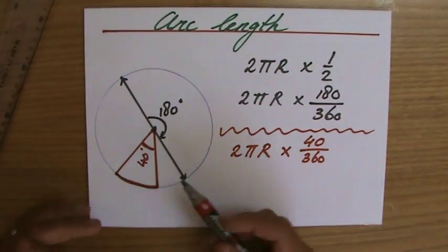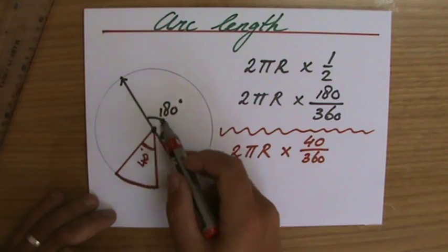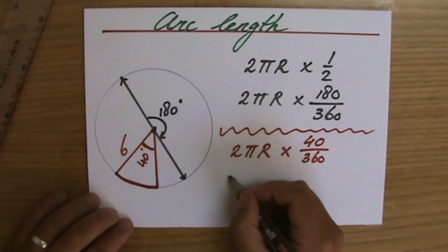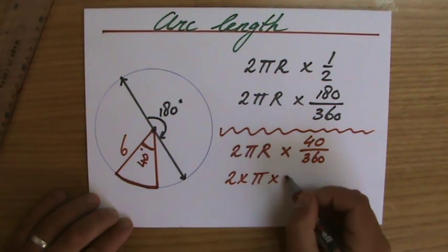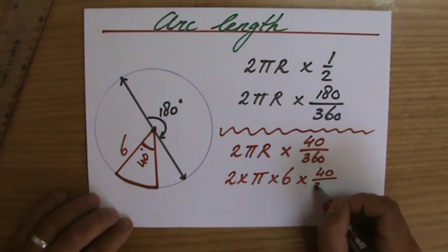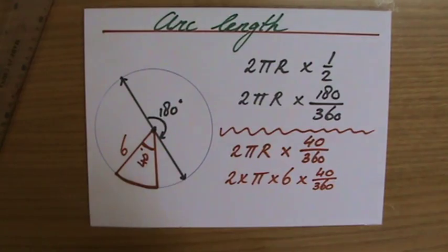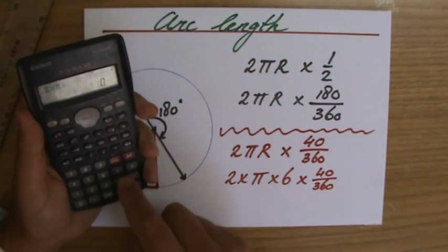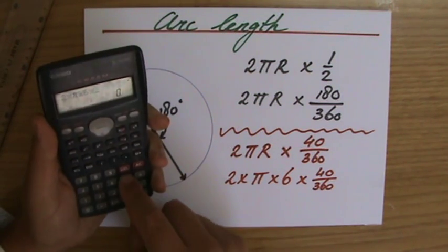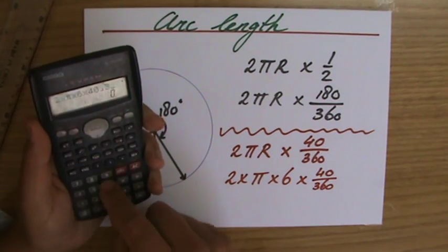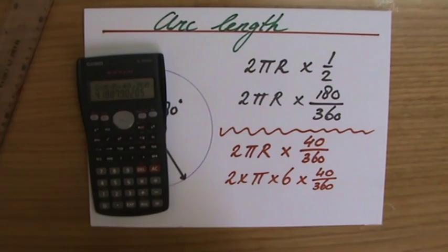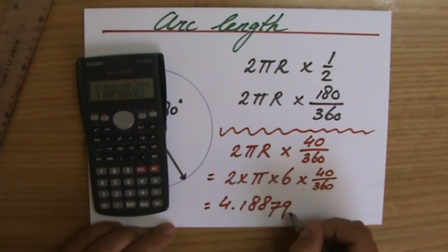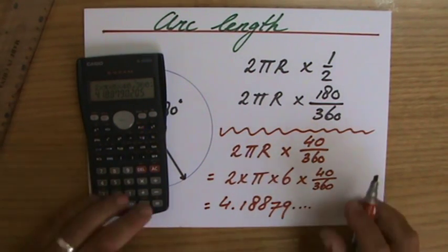Now, for half a circle, you would just times by a half, but that is actually 180 out of 360. So I believe we said that the radius was 6, so let's just continue with this one. 2 times pi times 6 times 40 out of 360, which is actually 1 over 9, but okay, that's for the experts. 2 times pi times 6 times 40 over 360 equals, and then it's going to tell me that that equals to 4.18879 and a couple of more decimals, which correct it to 3 significant figures, because that's how we have to correct it.